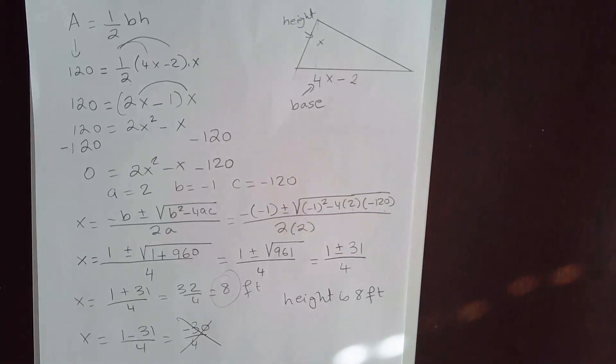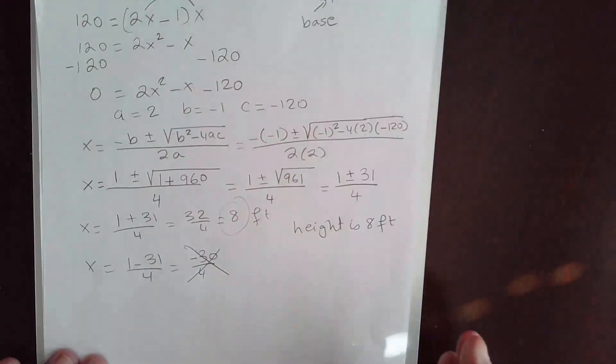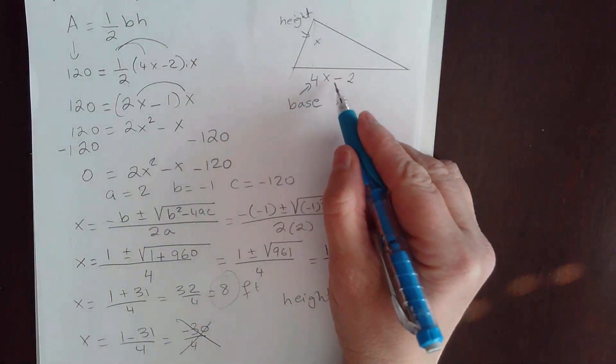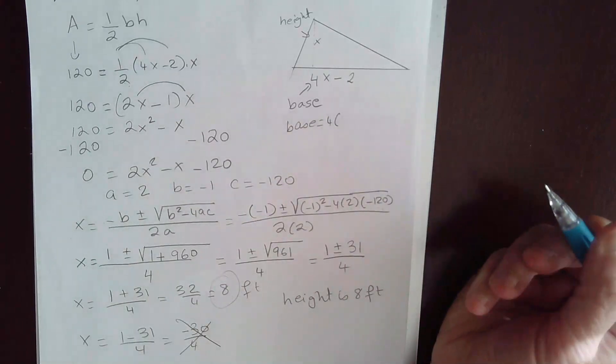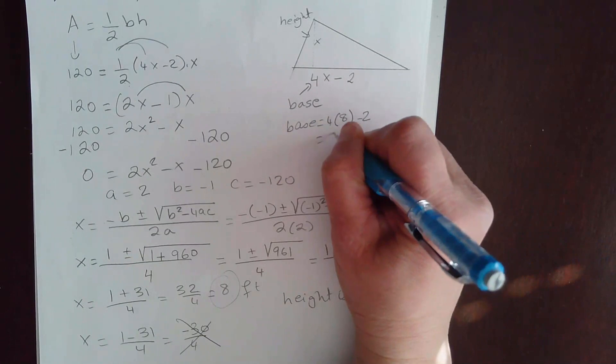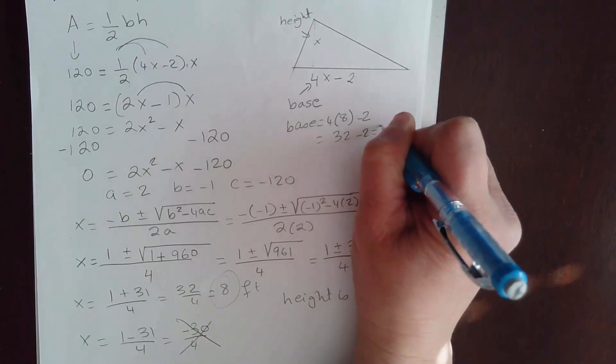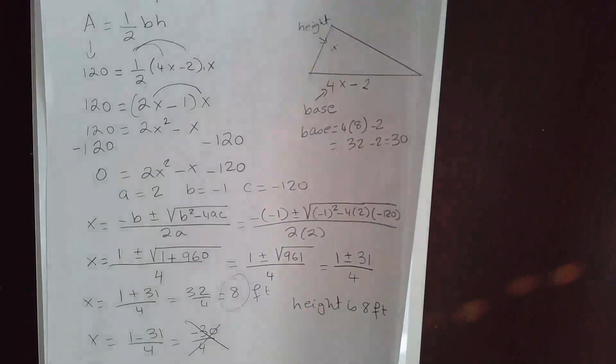Now, let's go ahead and solve for the base. What is the base? We already have it here, 4X minus 2. So the base is 4 times X. We just found it to be 8. 8 minus 2, which is 32 minus 2. That's equal to 30. So the base is 30 feet.